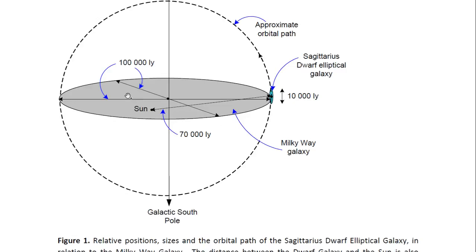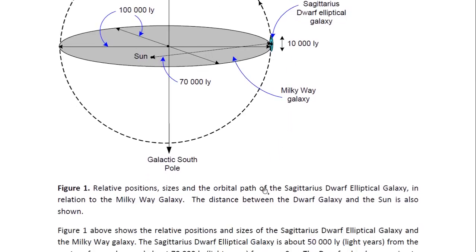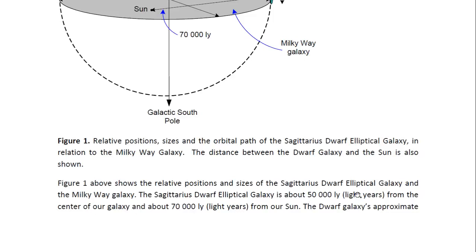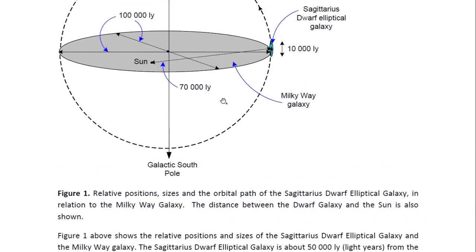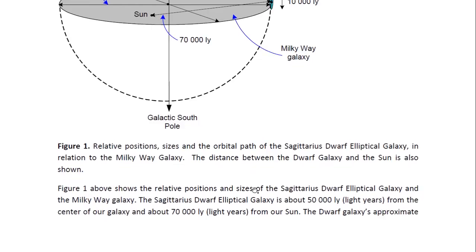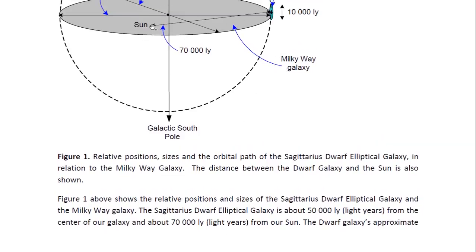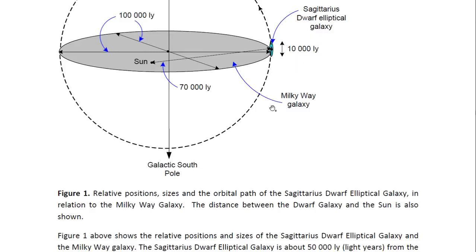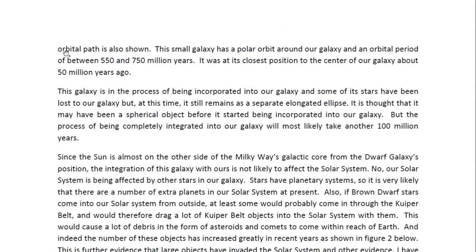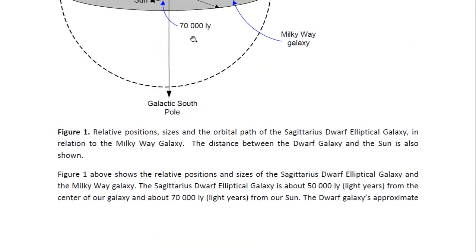Our galaxy has a diameter of 100,000 light-years and the diameter of the Sagittarius Dwarf Elliptical Galaxy is only 10,000. It has a polar orbit around our galaxy. The Sagittarius is about 50,000 light-years from the center of the galaxy — that's the radius — right at the edge, and about 70,000 light-years from the Sun. The galaxy's approximate orbital path is shown, and it is polar.